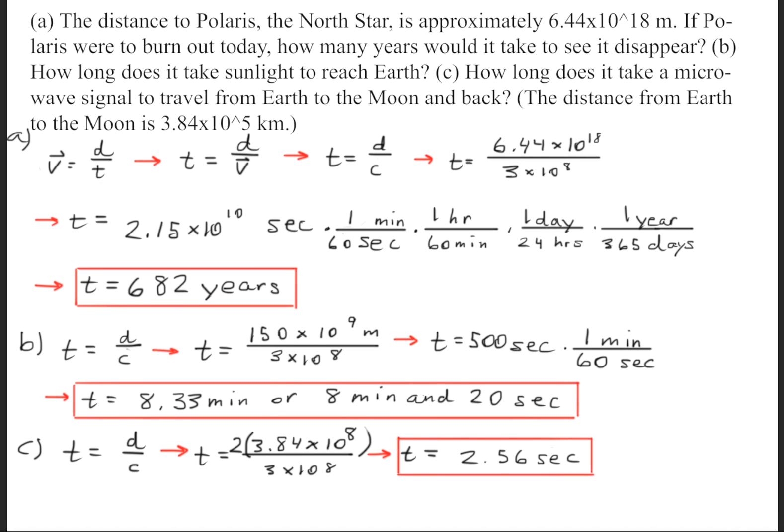For part C, again, we use the relationship T is equal to the distance divided by the speed of light. Now, for the microwave to travel to the Moon from Earth and come back, you're going to have to double that distance.